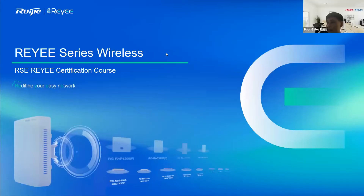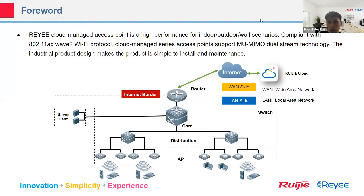Now we go to the wireless chapter. Our product has Wi-Fi 6 with multi-MIMO technology, and it's very easy to configure and manage. On the RE device — including the router, switch, and access point — you can manage on the cloud and under the SON solutions that we introduced yesterday.